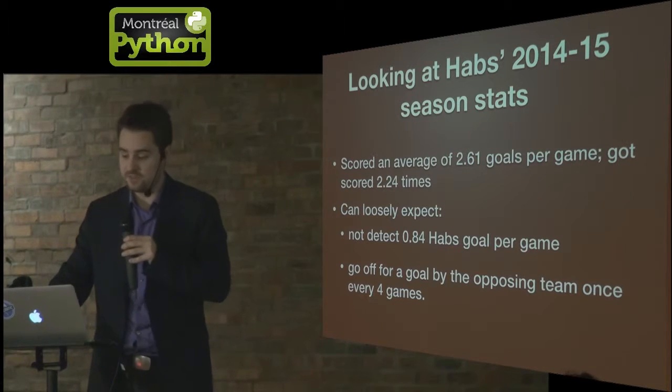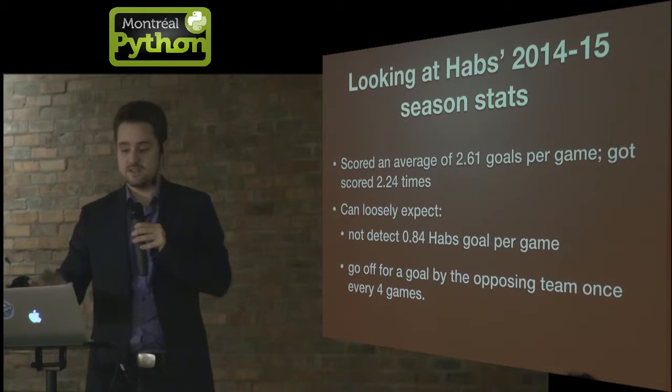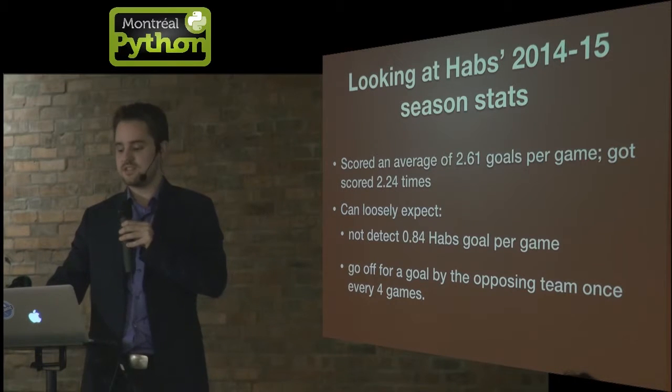Looking at the stats from the previous season, I could extrapolate based on cross-validation: loosely, 0.84 Habs goals per game would be missed, and we'd go off by mistake once every four games on a Leafs goal. Those numbers aren't perfect — you'd want to get closer to zero — but the more Habs goals you detect, the more risk of false positives. To make those numbers better, I'd need better feature extractors, more powerful classifiers, and more data. But for getting something done in two weeks, this was better than I expected for such trivial features and a simple model.